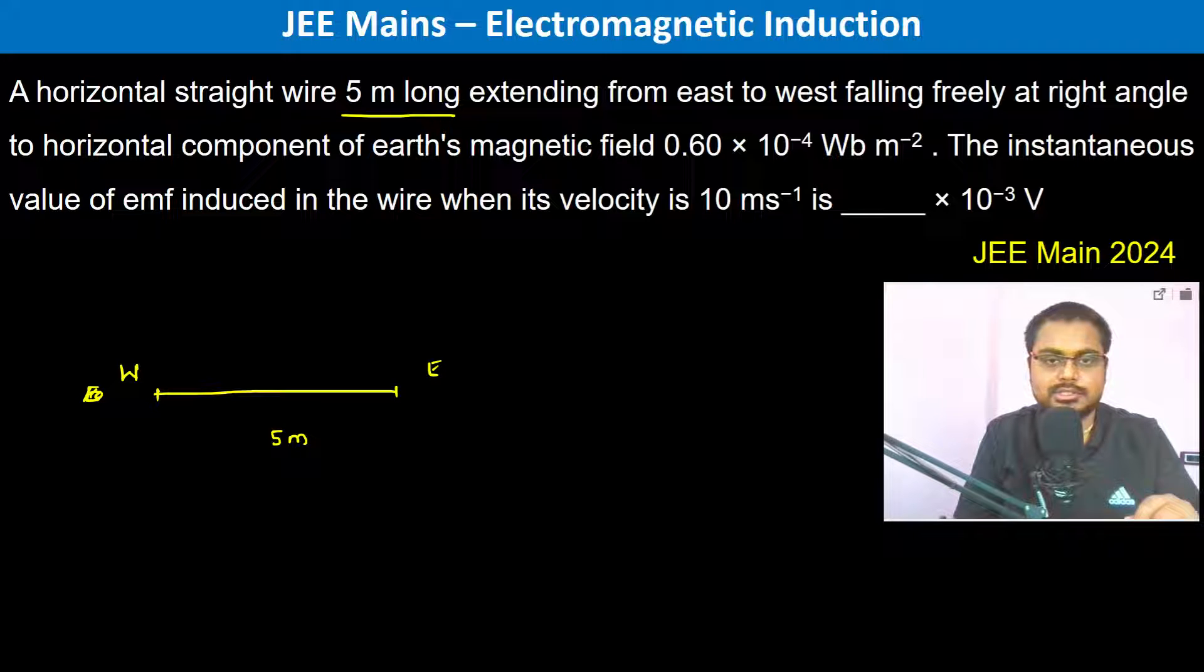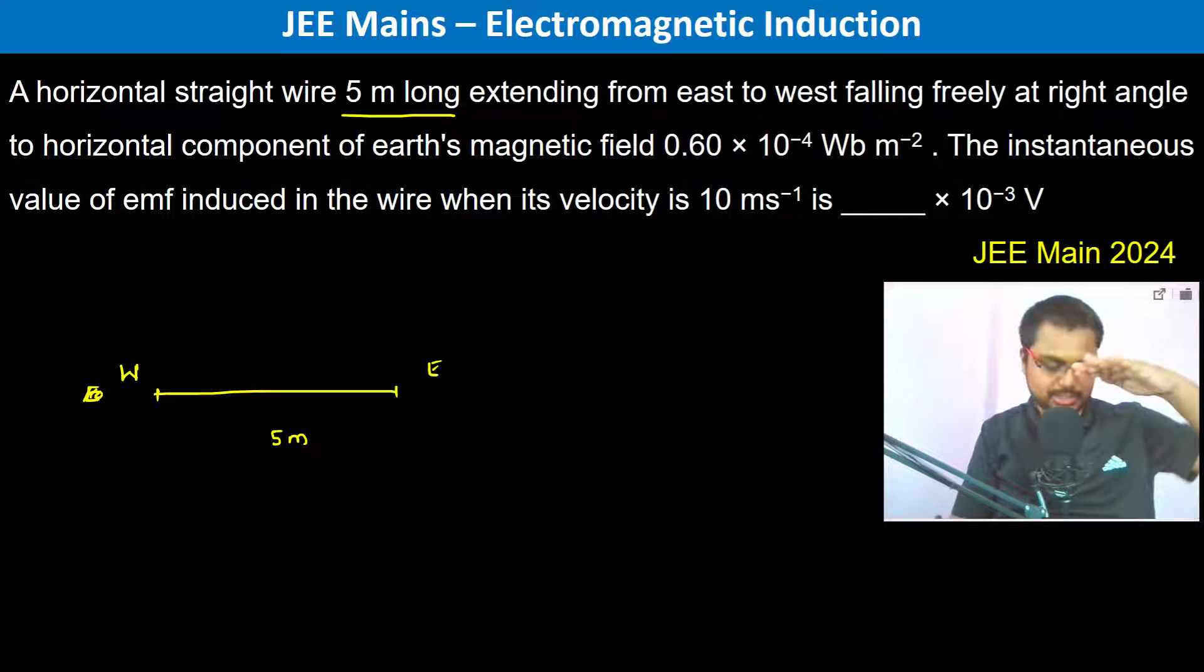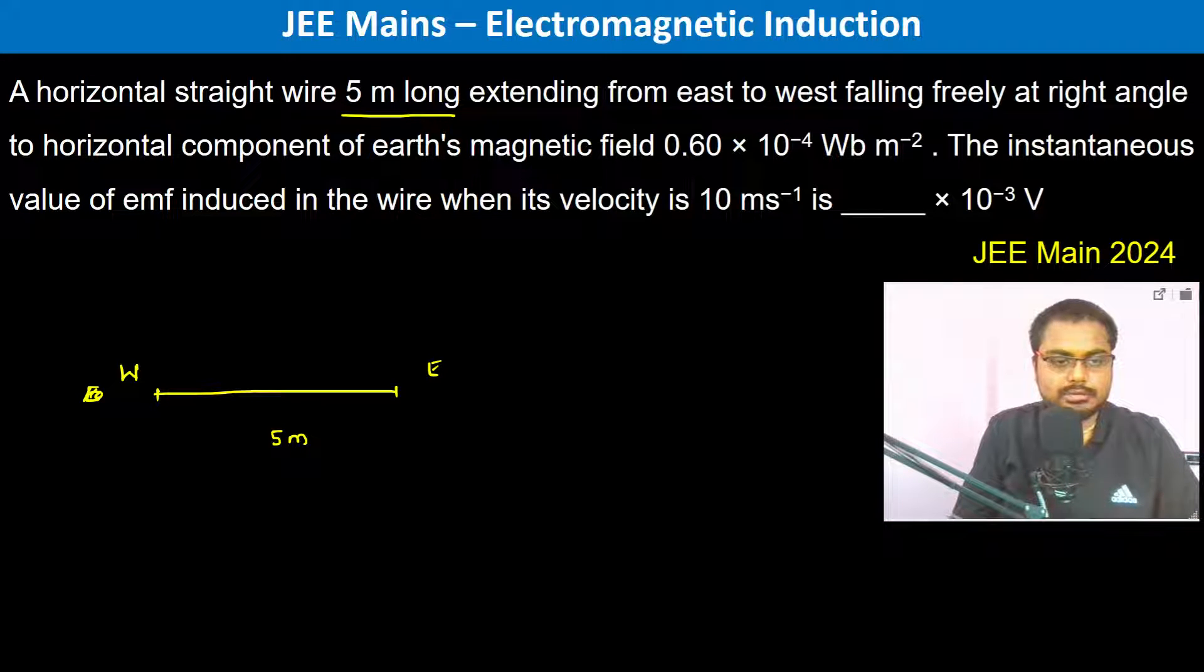angle to the horizontal component of Earth's magnetic field. The horizontal component of Earth's magnetic field is in this direction.